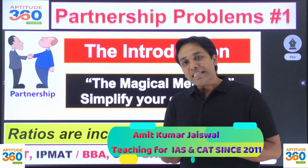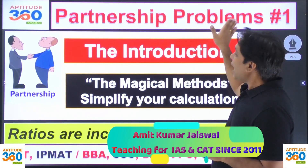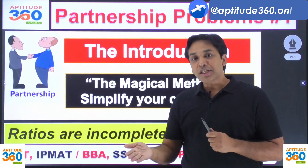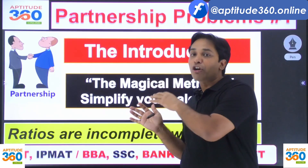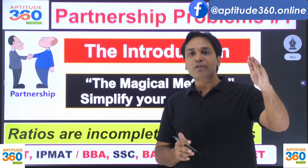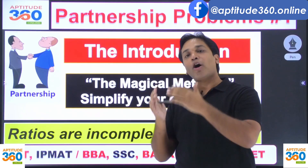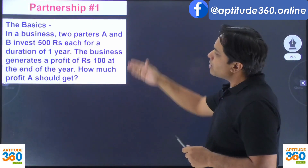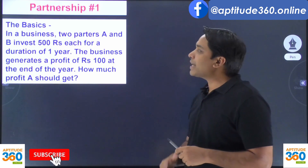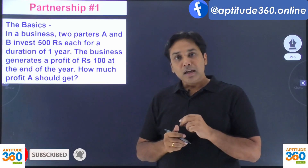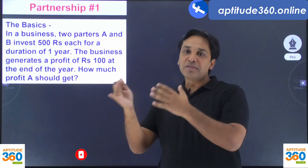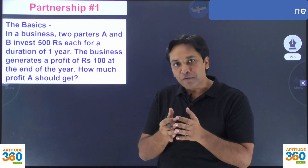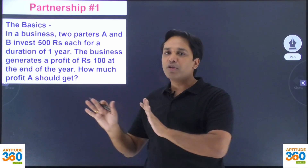Hey everyone, this is video number one in the series on partnership. Learning ratio and proportion is incomplete without learning partnership. In these kinds of problems, you get partners who are investing money, getting out of the business, making profits — how much profit A should be getting, how much profit B should be getting. That is the objective of this video.